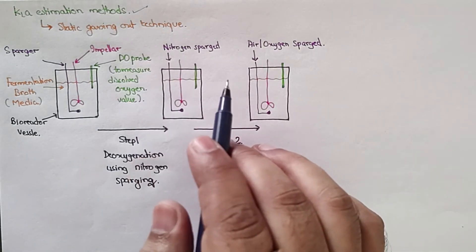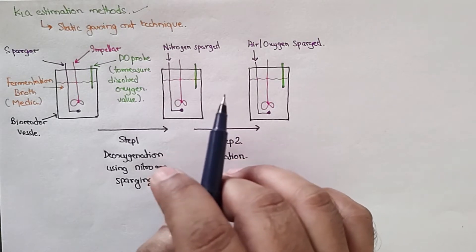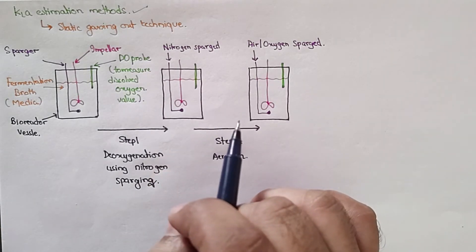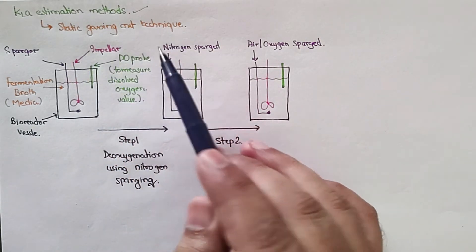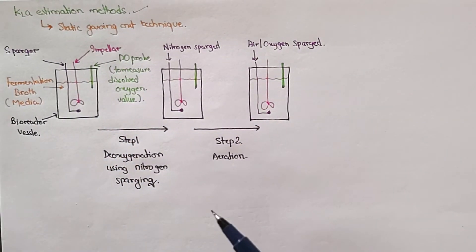Understanding oxygen transfer in the liquid media, in the fermentation broth during aeration and agitation, is crucial. One of the methods for estimating KLA is the static gassing out method. Let's see how the apparatus or design of this experiment looks like.